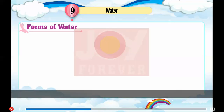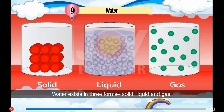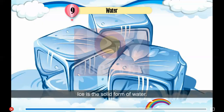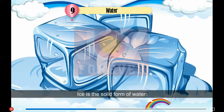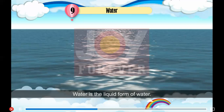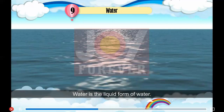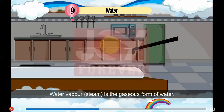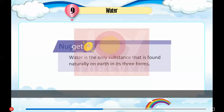Forms of Water. Water exists in three forms: solid, liquid, and gas. Ice is the solid form of water. Water is the liquid form. Water vapour and steam are the gaseous form of water.